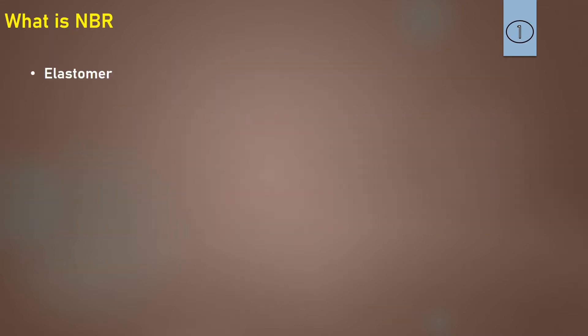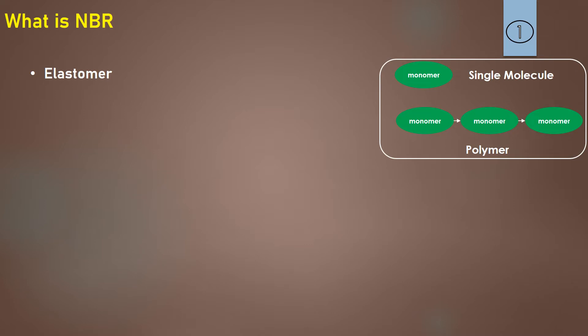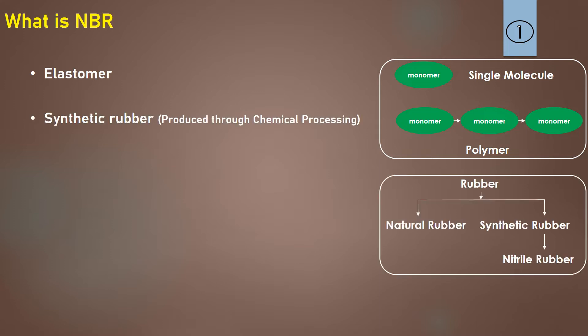NBR is an elastomer. A single molecule is called a monomer, and multiple monomers connected through a chain form a polymer. A polymer which has the capability of regaining its original shape and stretchability is called an elastomer. There are two types of rubbers: natural rubber, which is taken from trees, and synthetic rubber, which is produced through chemical processing. NBR is a synthetic rubber.